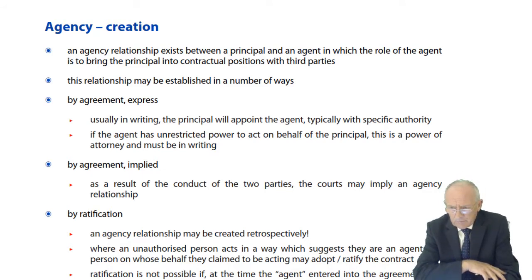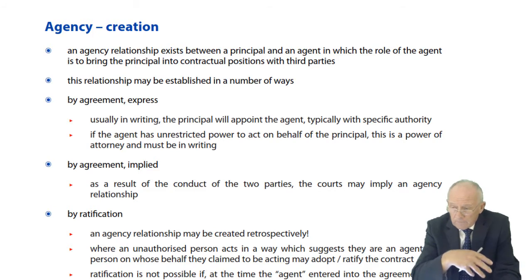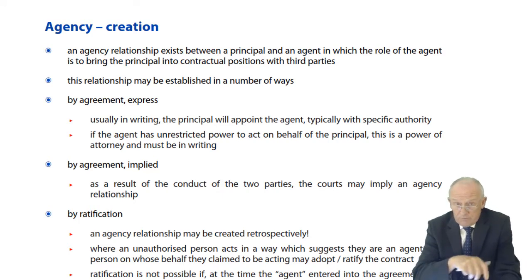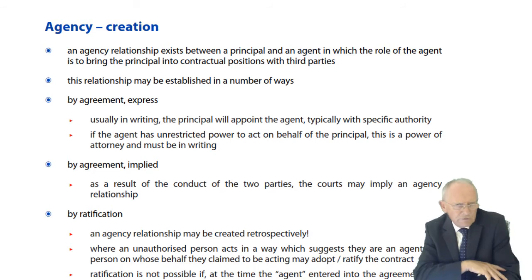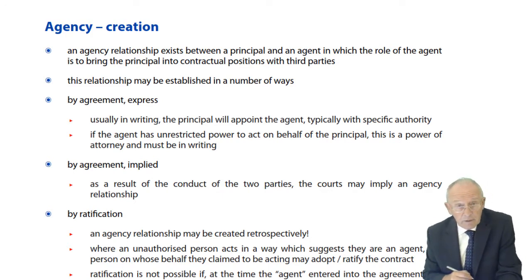I remember when I was buying a home back in the late 1980s, I had some intense things going on in my life just at the time I wanted to finalize the purchase of the house. So I appointed my solicitor to be my agent and gave him full authority — he could act as though he were me without having to keep coming back asking questions. So it was actually my solicitor that bought my house. That is called the power of attorney, and the power of attorney has to be in writing. But it's not always the case that an agency relationship has to be in writing.